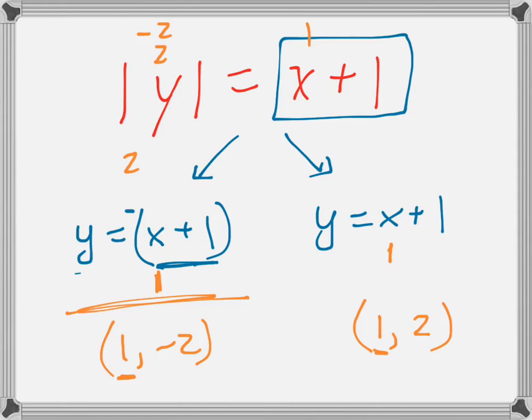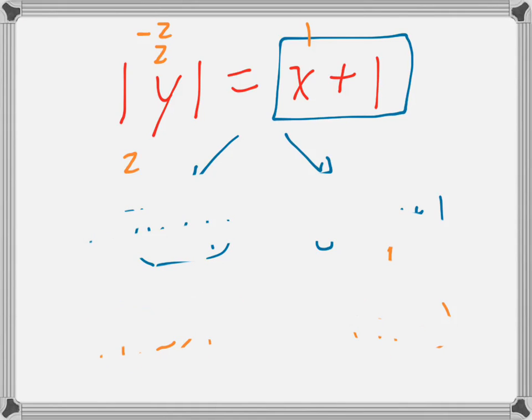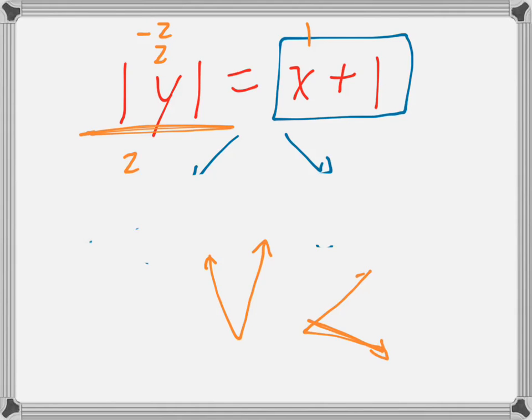Now the easiest way for me to see this solution is if you understand how to graph things. To me, graphing things makes the most sense. If you know that this thing can be graphed as a v, an absolute value graph is a v like this typically. But if the absolute value signs are around the y, it's actually a sideways v, not an up and down v.